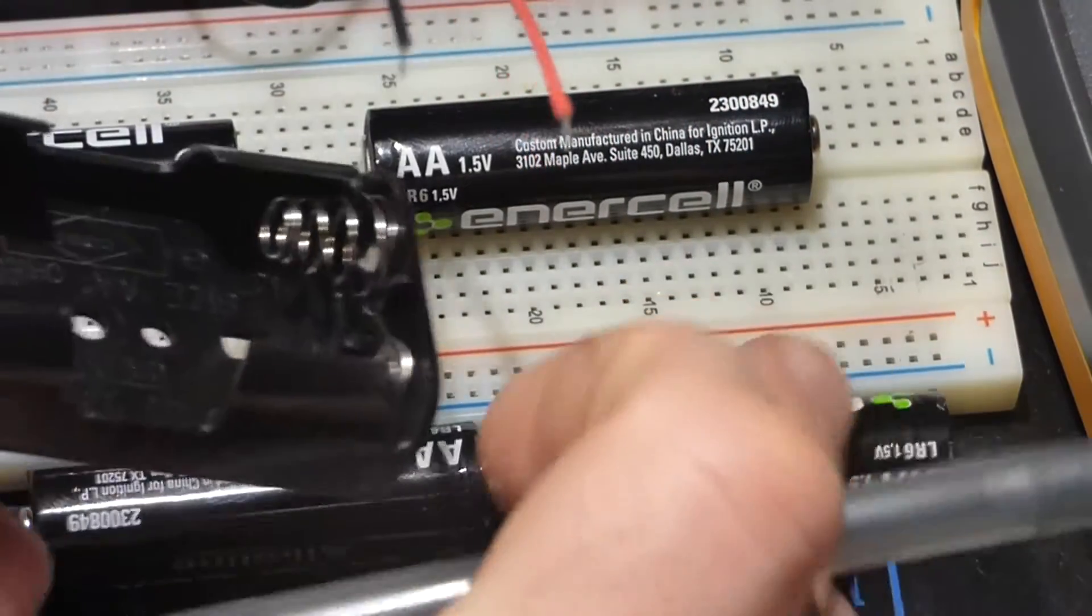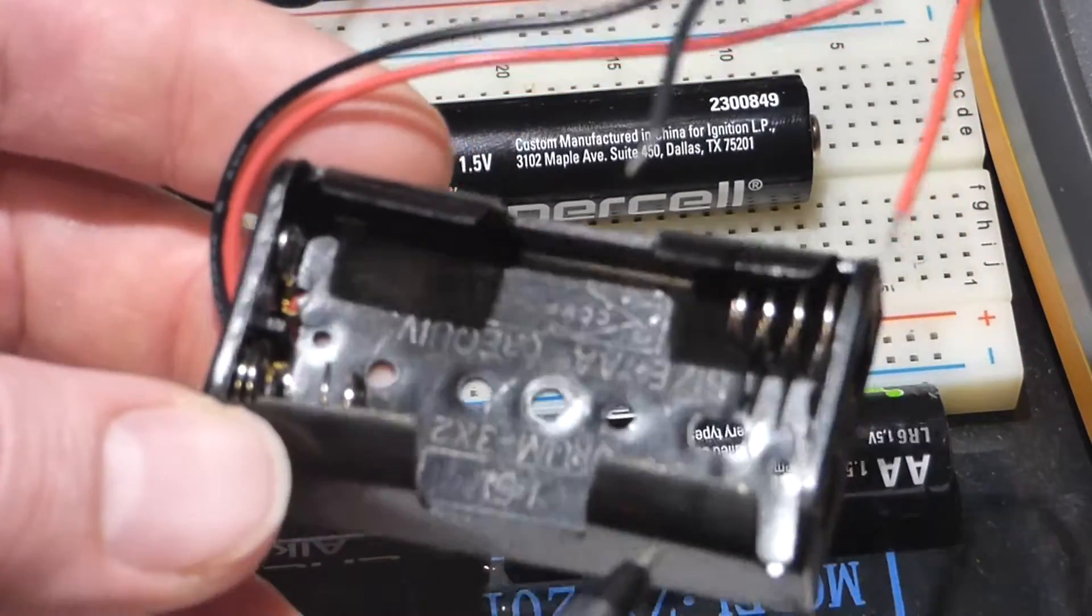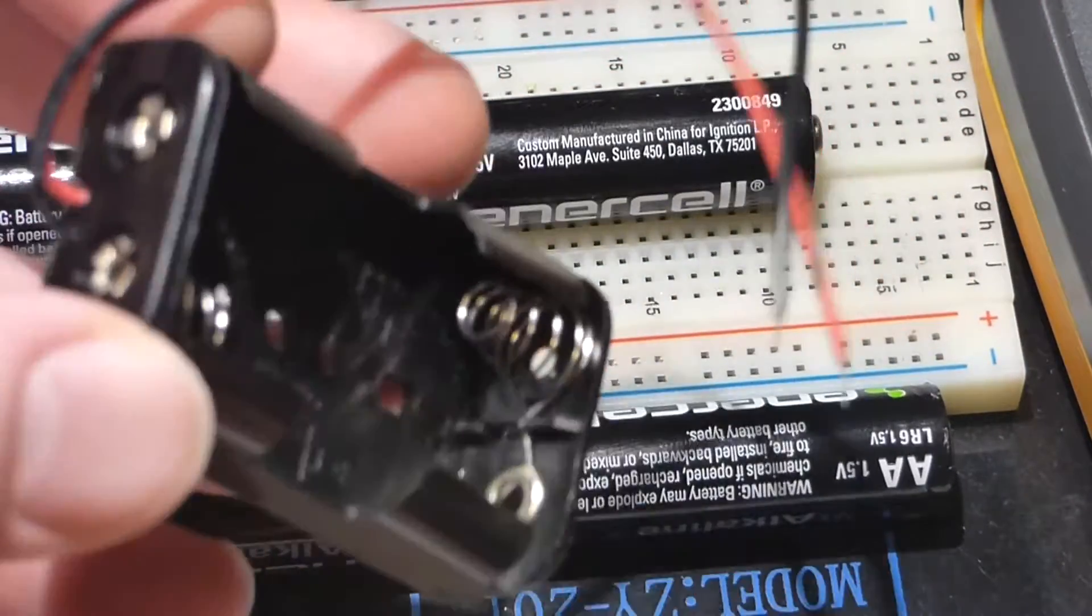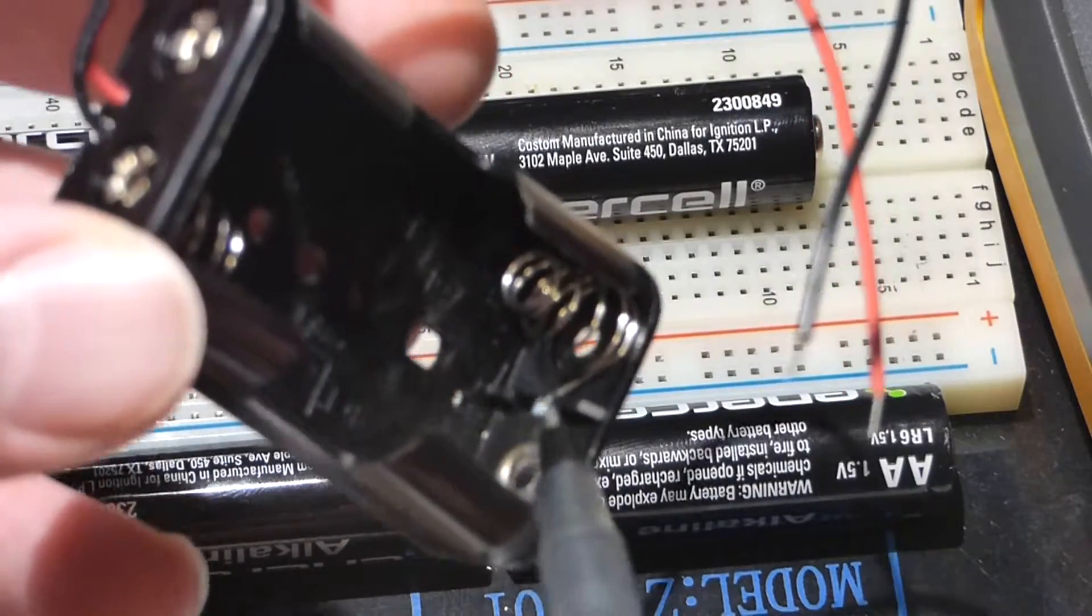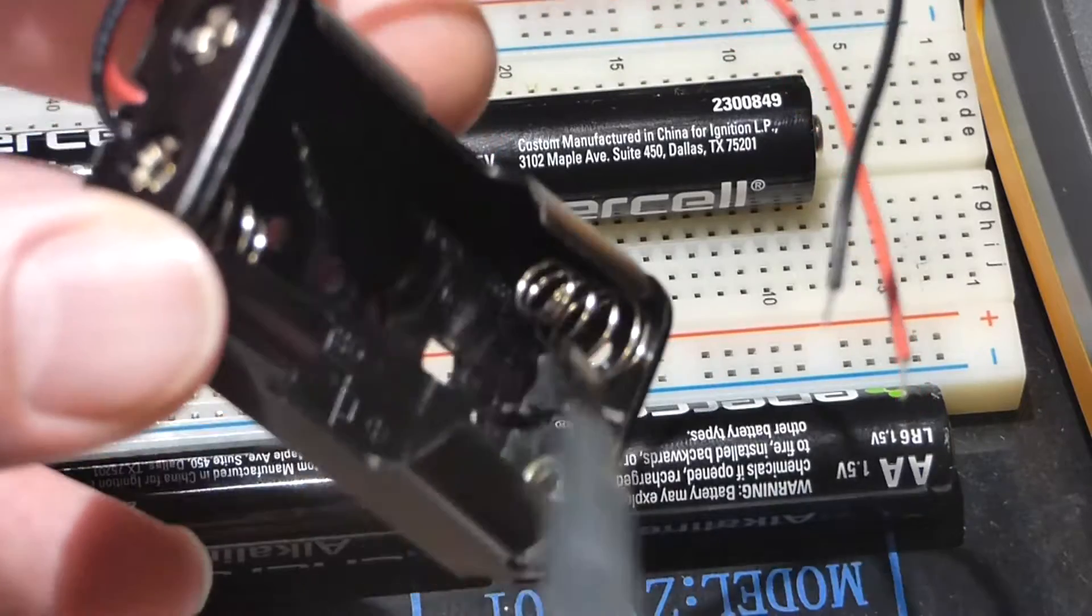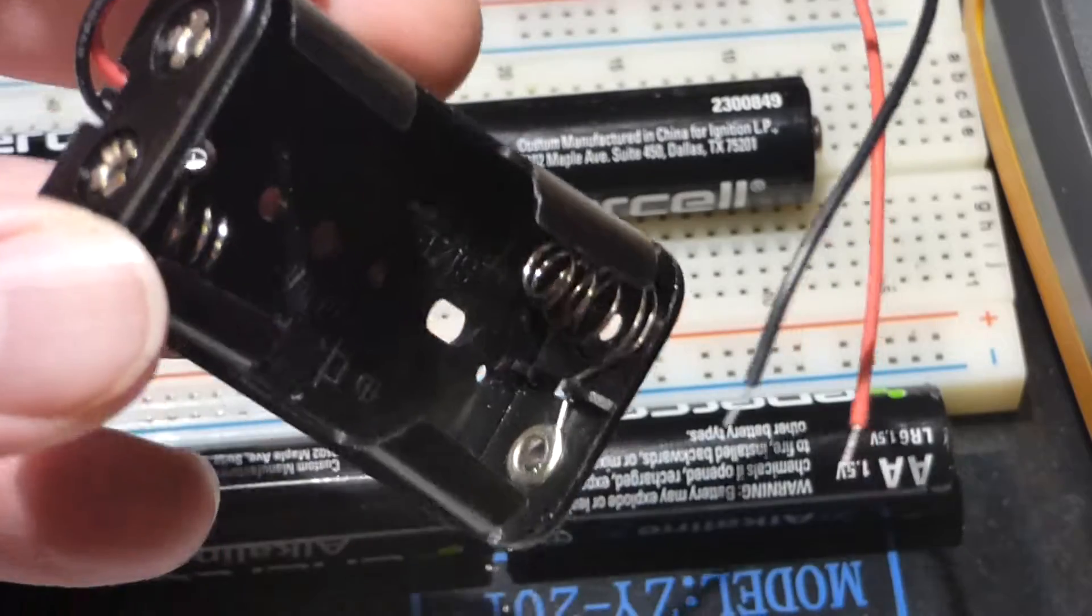So now, of course, just pushing them together like that isn't very practical, so normally you would use a battery pack like this for your projects. And here you can see the two batteries are connected at this spot here—negative side of one battery there to the positive side of the other battery there.